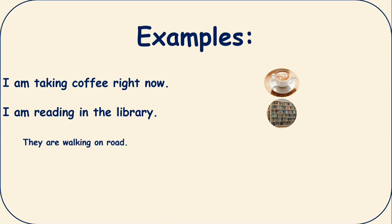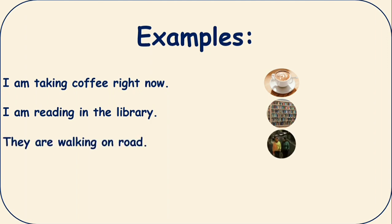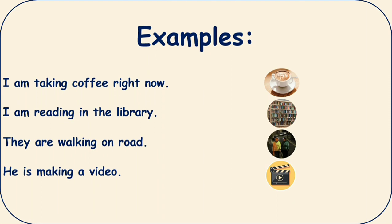Number three: They are walking on road. As you can see in the picture, two ladies are walking on the road. Number four: He is making a video. That means his action right now is he is making a video.